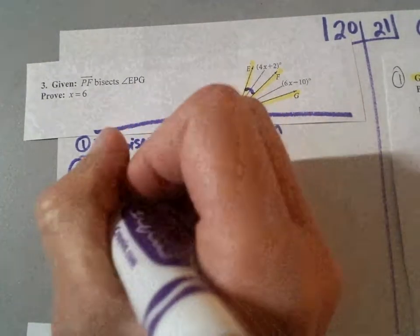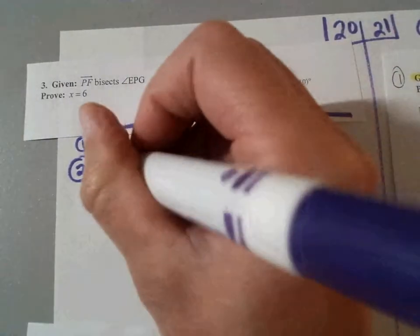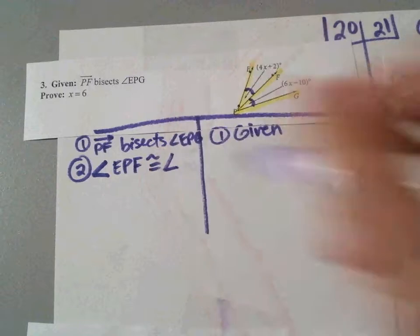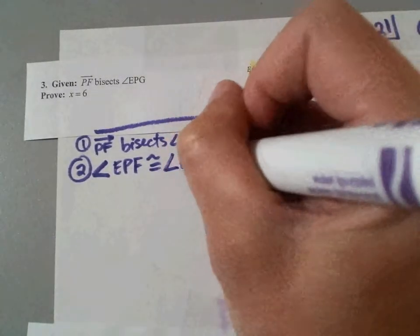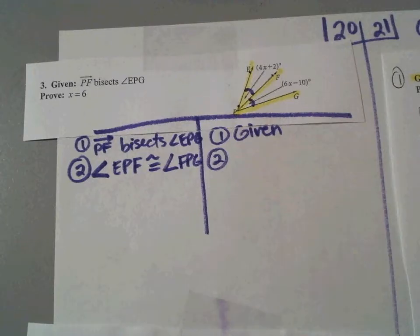So angle EPF. Very good. And angles are congruent to angle FPG. And the reason, how did you know that? This is a new reason we haven't heard yet. How did you know? How did you know? Because it's a bisector.